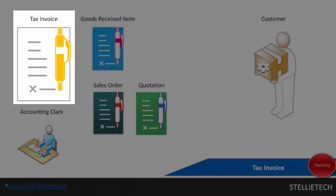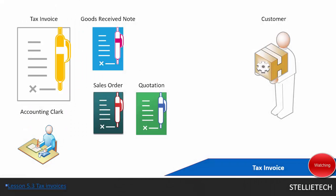Tax invoice. Once your customers have received their goods, they'll sign the goods received note and it will get returned to your business. When the goods received note arrives, the accounting clerk will compare the goods received note, sales order, and quotation, and ensure that they all match and correlate. Once it's approved, it'll be up to you to process the tax invoice.